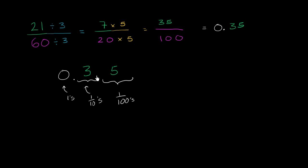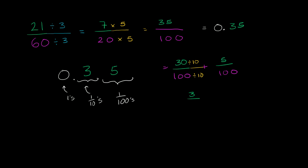You might wonder: there's a 3 in the tenths place — why is this 35 hundredths? Well, 3 tenths is 30 hundredths, so this is 30 plus 5 hundredths, which is 35 hundredths. You can rewrite this as 30 over 100 plus 5 over 100. Dividing 30/100 by 10 gives 3 tenths, so it's 3 tenths plus 5 hundredths — that's 35 hundredths.